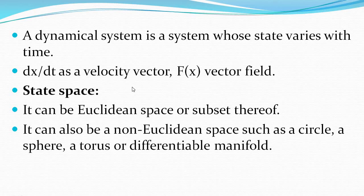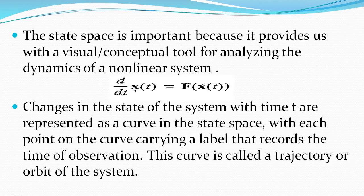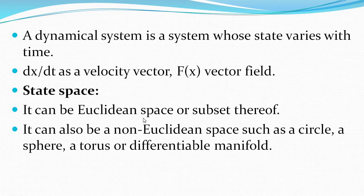Now we look at state space. State space can be a Euclidean space or a subset thereof, or it can be a non-Euclidean space — represented as a circle, sphere, torus, or differential manifold.